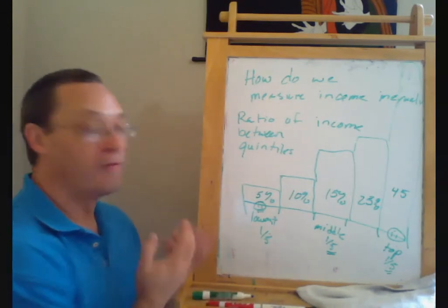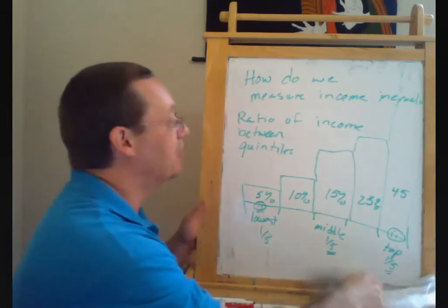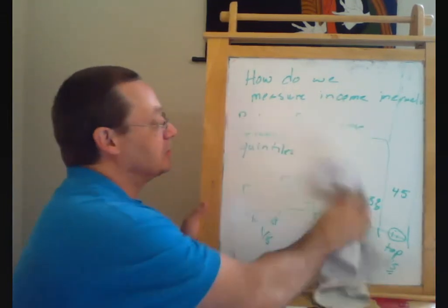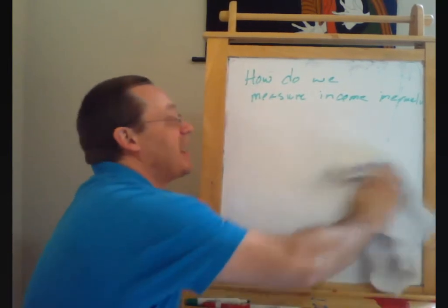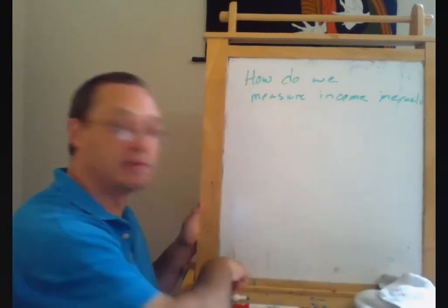Another common way, sort of a one single number summary, is what's called the Gini coefficient. And actually calculating the Gini coefficient is a little bit complicated,